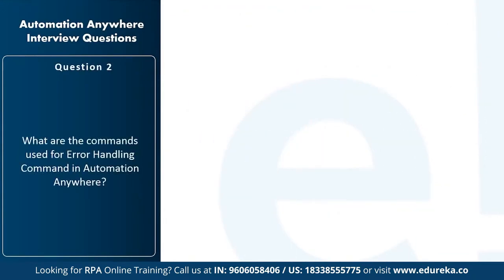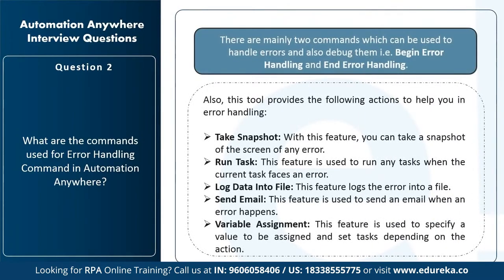The next question is: what are the commands used for error handling in Automation Anywhere? There are two main commands: begin error handling and end error handling. Apart from these, there are various actions you can perform within them: take snapshot (capture a screen screenshot of any error), run tasks (run another task when the current one faces an error), log data into file (log errors into a file), send email (send an email when an error occurs), and variable assignment (specify a value to be assigned based on the action).